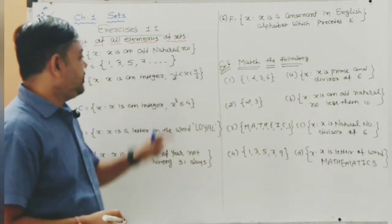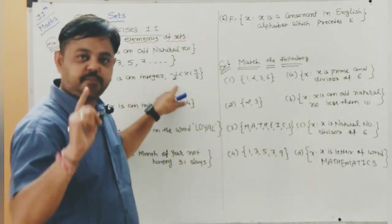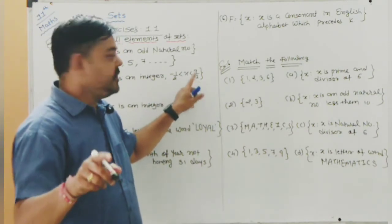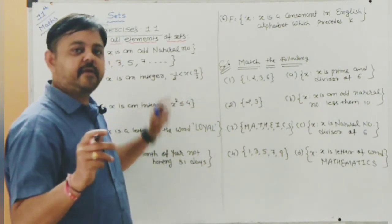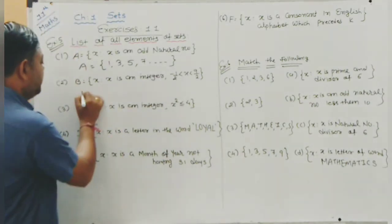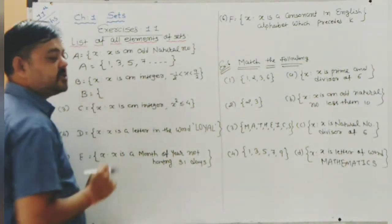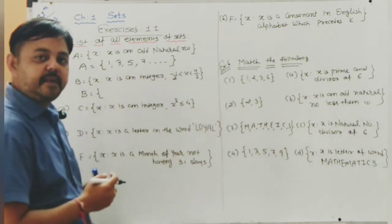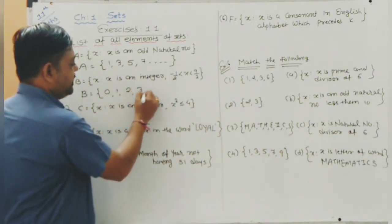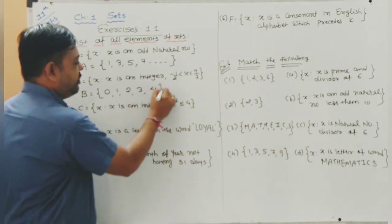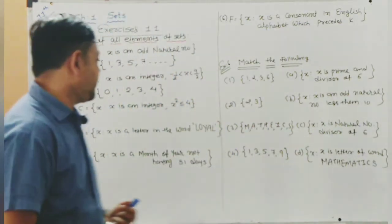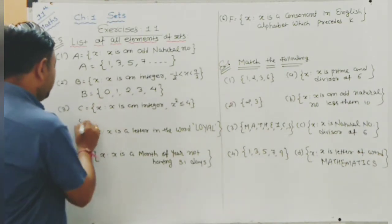Set B = {x : x is an integer and -1/2 < x < 9/2}. That is between -0.5 and 4.5. The integers in this range are: 0, 1, 2, 3, and 4.